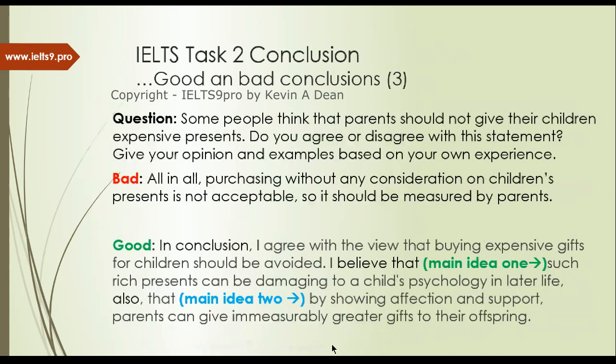Some more conclusions. Some people think that parents should not give their children expensive gifts — do you agree or disagree? A bad example: 'All in all, purchasing without any consideration on children's presents is not acceptable, so it should be measured by parents.' Where's the opinion? Where are the ideas? A good example: 'In conclusion, I agree with the view that buying expensive gifts for children should be avoided. I believe they can be damaging to a child's psychology. Also, it's better to show affection and support because these are immeasurably greater gifts.' So: if it's too short, if it doesn't begin with 'in conclusion', if it doesn't have the opinion and the main ideas — then it's no good. Don't do it.